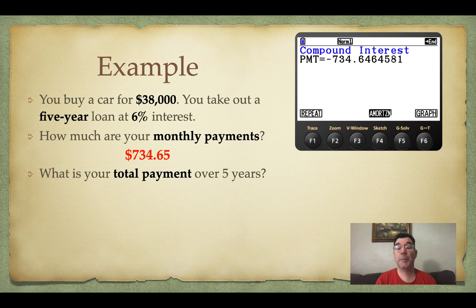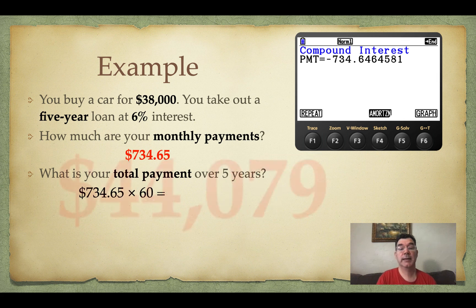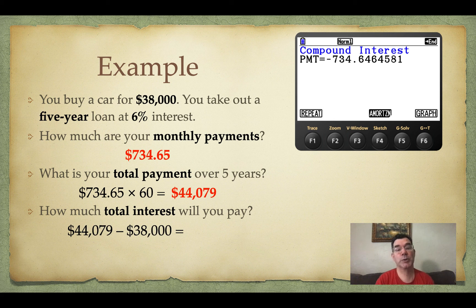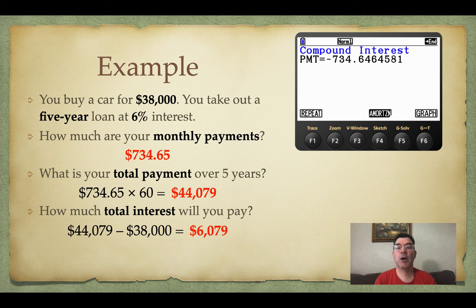Our total payment over five years — since we are paying $734.65 every month for 60 months — is going to be $44,079. The total interest I will pay is that total repayment minus the amount I originally borrowed, which was $38,000. So over the course of five years, I am paying $6,079 in interest. That is a quick lesson on loans and how to pay them back. If you have any questions, please let me know and I will see you tomorrow.